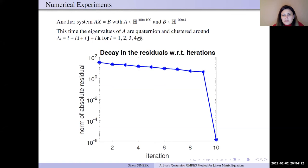The norm of absolute residuals decreases after 10 iterations. And this is not like usual real and complex case. Because after five iterations, the residual is still not small.